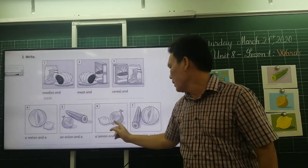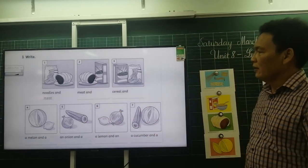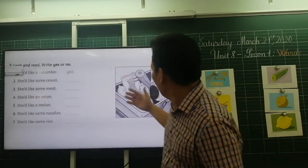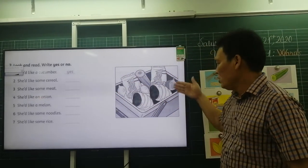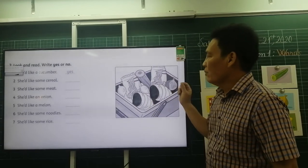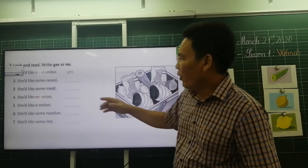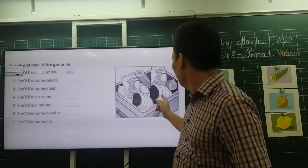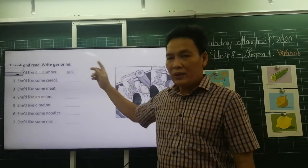Number two, three, four, five, six, seven, okay. And this one, you can look at the picture carefully and write yes or no. For example, number one, I would like the cucumber. Cucumber, yes, okay.